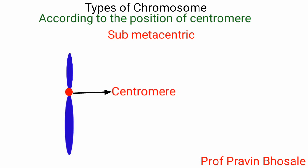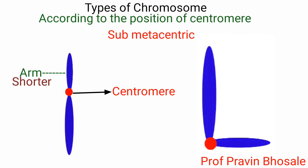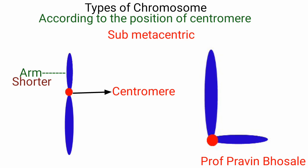Submetacentric: if the centromere is situated some distance away from the middle, one arm of the chromosome is shorter than the other. It appears L-shape in anaphase.